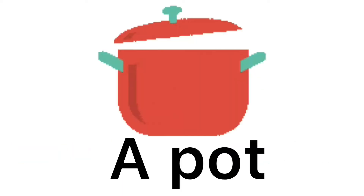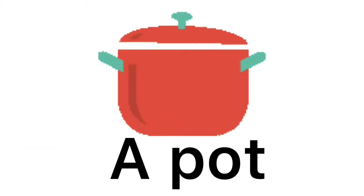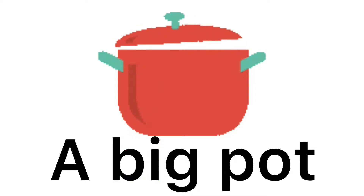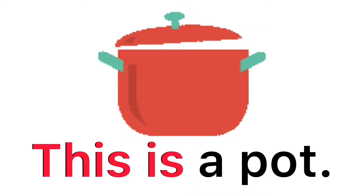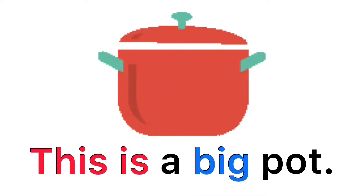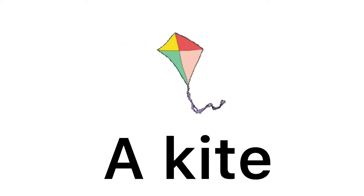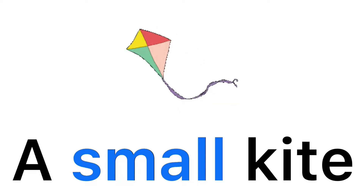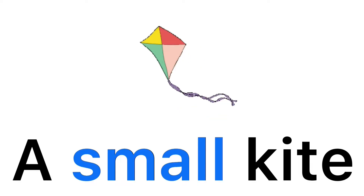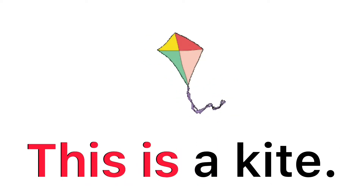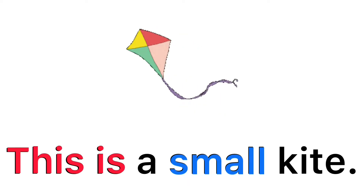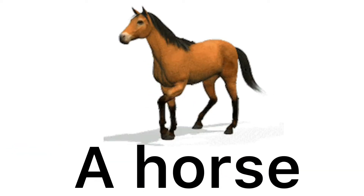A pot. A big pot. This is a pot. This is a big pot. A kite. A small kite. This is a kite. This is a small kite.